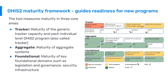The tool measures maturity in three core areas: foundational at the bottom, aggregate in the middle, and tracker on top. The symbols shown indicate the stage of each program: the in-development symbol with a little tool means the program is being configured but not yet implemented; the pilot symbol with wheels turning means it's been tested in a couple of facilities; and the arrow pointing upwards means it's in the process of scaling or fully scaled.